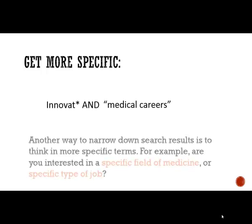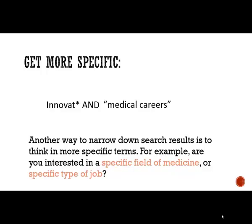Another way to change your search is to get more specific. If you find that your search results are a bit vague and unfocused, you might try this. Rather than searching very generally about medical careers or professions, what if we focused on a specific area — for example, pediatrics — or maybe a specific type of job, such as nursing? This is often a way that you'll get fewer results, but they'll be a bit more focused.